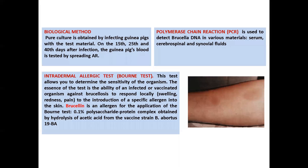Biological method: pure culture is obtained by infecting guinea pigs with the test material. On the 15th, 25th, and 40th days after infection, the guinea pigs' blood is tested by spreading agglutination reaction. Polymerase chain reaction (PCR) is used to detect Brucella DNA in various materials such as serum, cerebrospinal fluid, and synovial fluid.